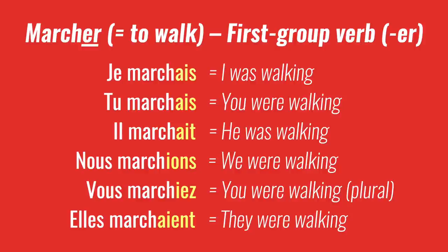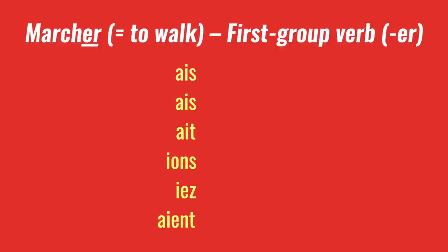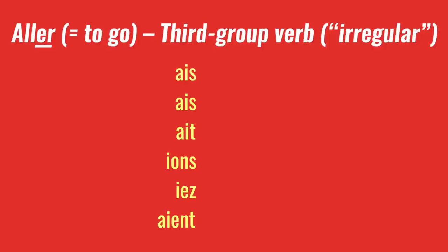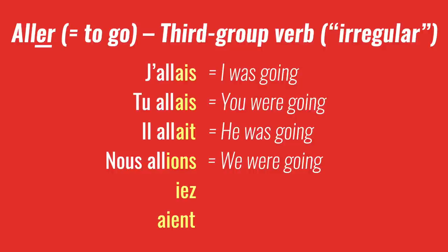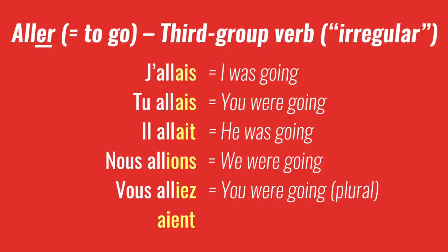Now we can take these endings and plug them into any verb we like. For example, 'aller,' to go: J'allais, tu allais, il allait, nous allions — with la liaison — vous alliez — again with la liaison — and elles allaient. They were going.